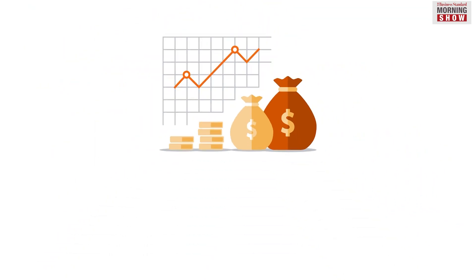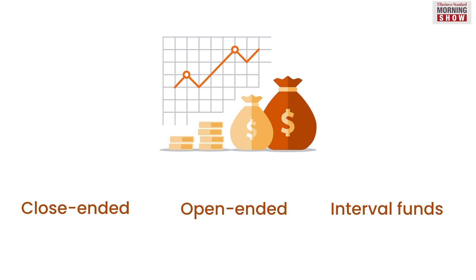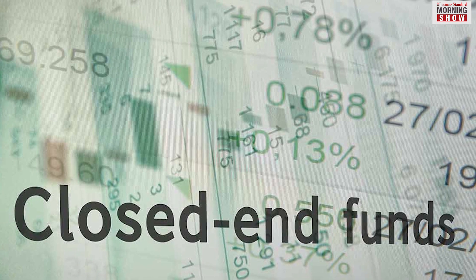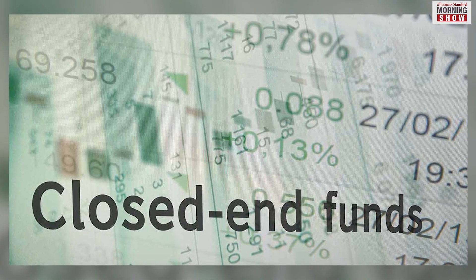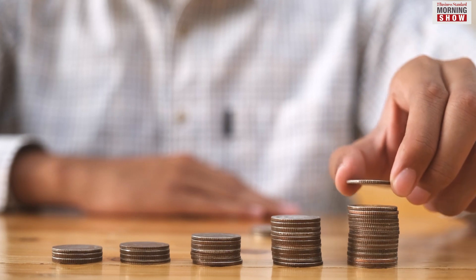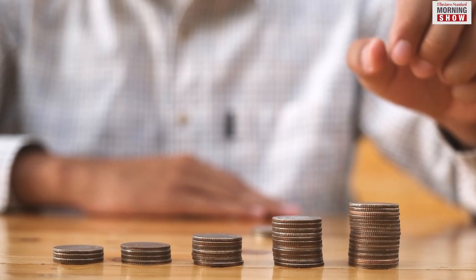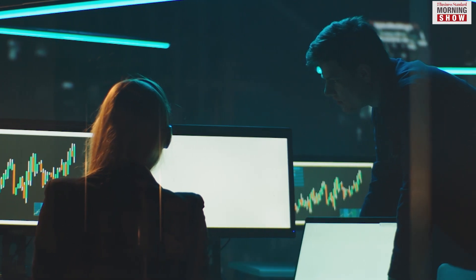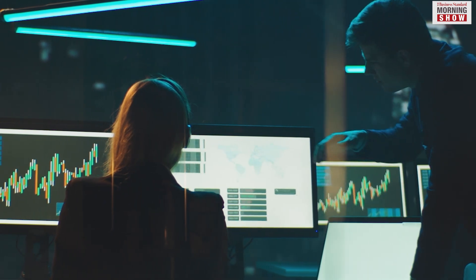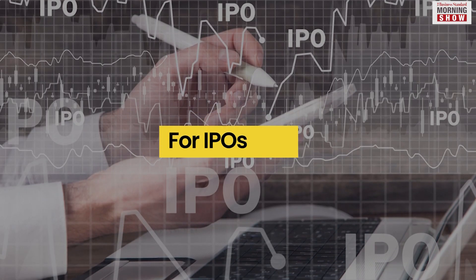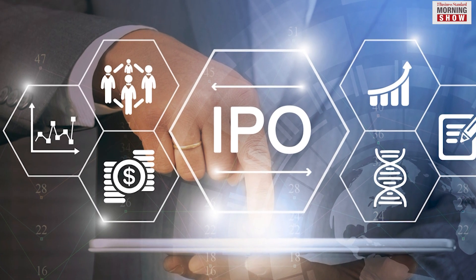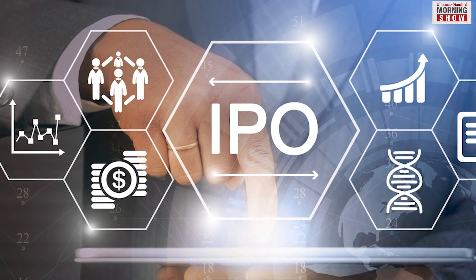There are three types of mutual funds: close-ended, open-ended, and interval funds. Close-ended mutual funds have a minimum lock-in period of three to five years. For example, the Equity Linked Savings Scheme has a lock-in period of three years. Most other mutual funds don't have a lock-in period.